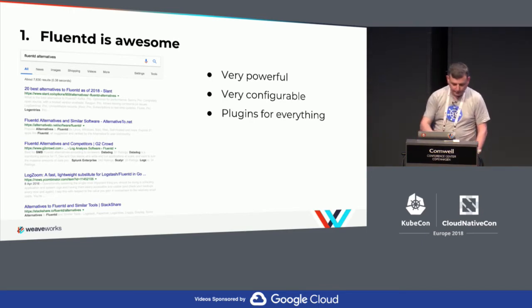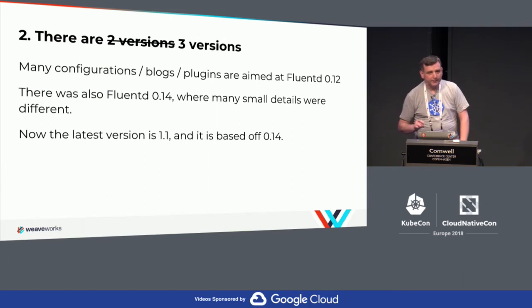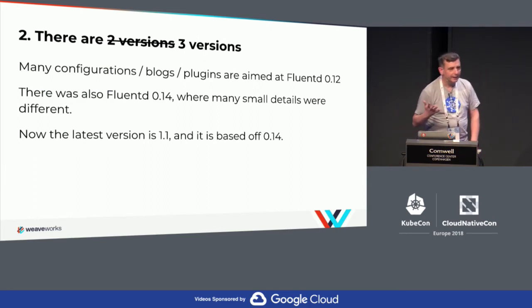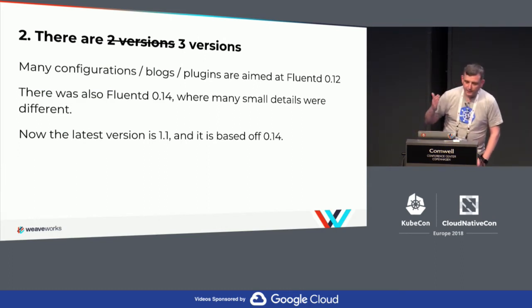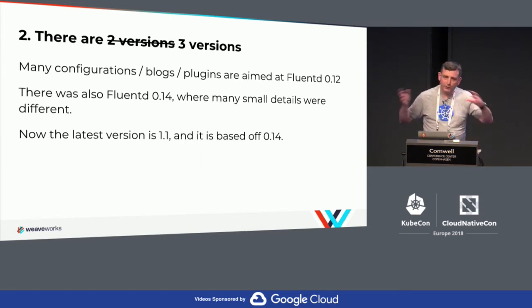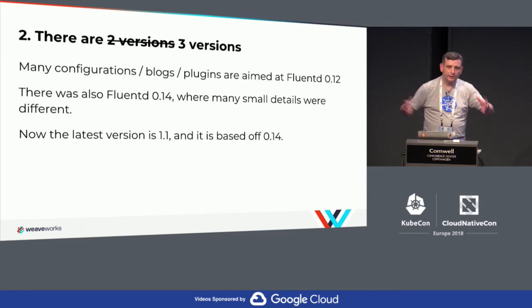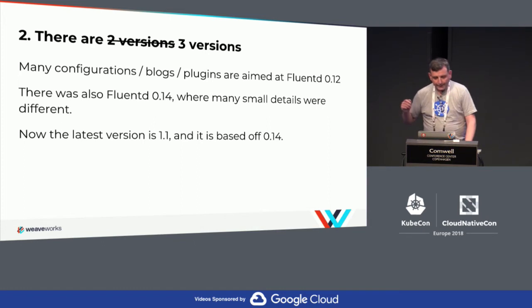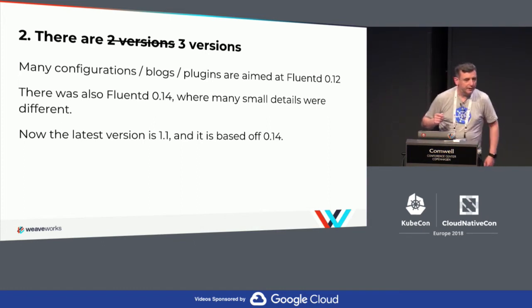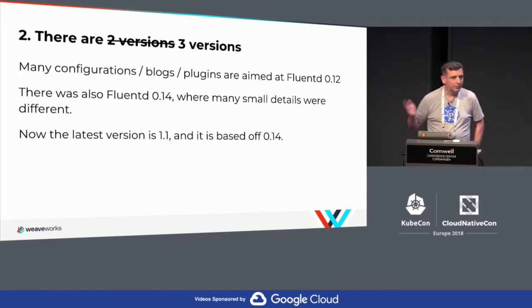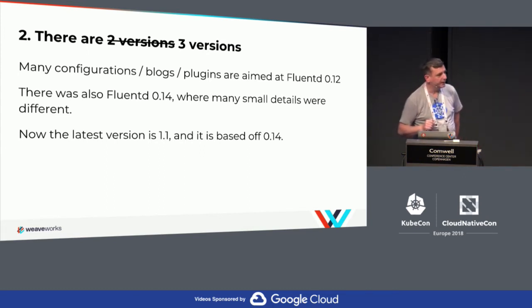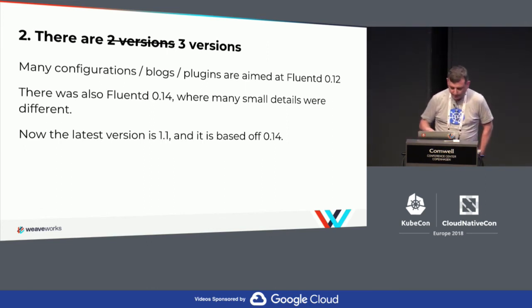What else did I have to learn? Versions — this was kind of complicated. They used to have a 0.12 and a 0.14, and most of the blog posts you read are about 0.12. The newest one was 0.14, but it didn't seem to be the mainstream version. As it happens, that resolved itself late last year. They released 1.0, which is based off 0.14. So almost every blog post about FluentD is wrong. But they'll catch up — it's moving forward, it's good stuff.